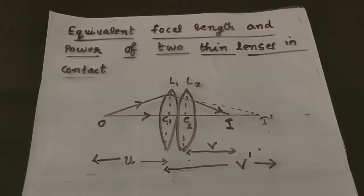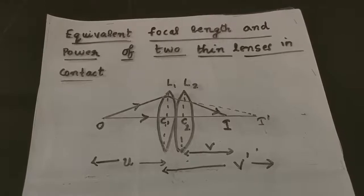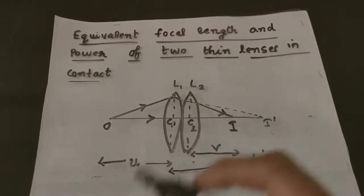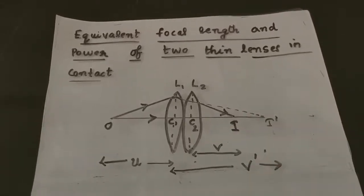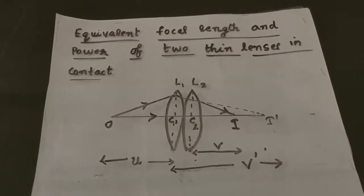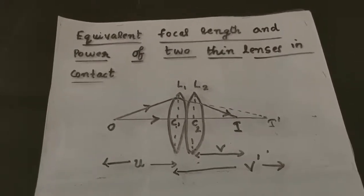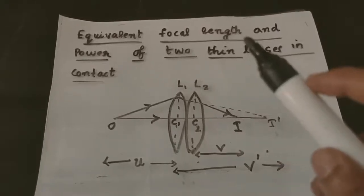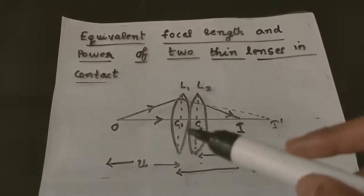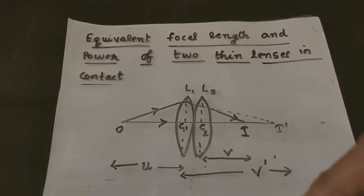Hi students, now we are going to study about equivalent focal length and power of two thin lenses in contact. In the last video we have just started discussing about combination of thin lenses. Now we are going to find the focal length and power of two thin lenses that are in contact.